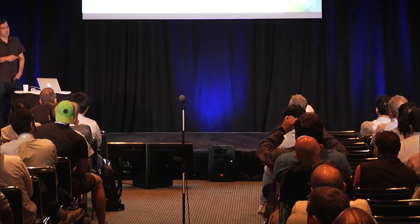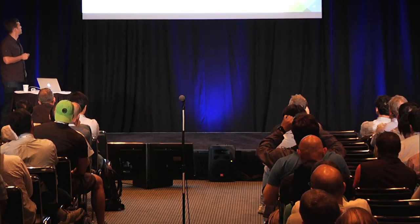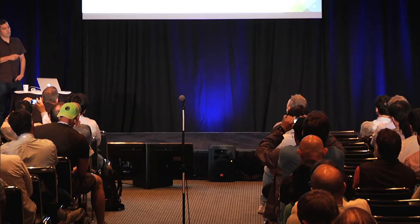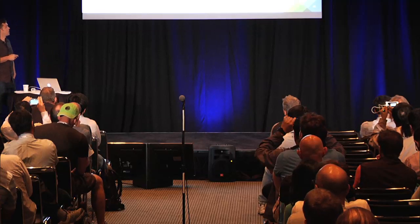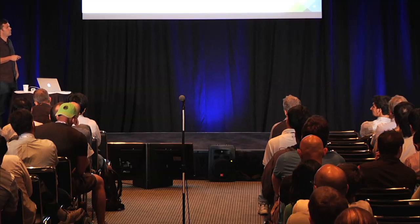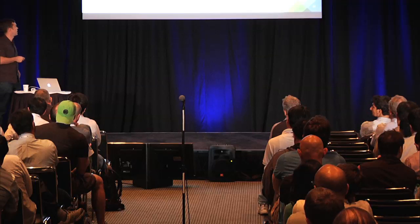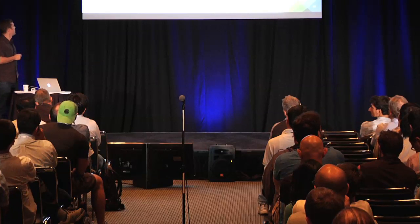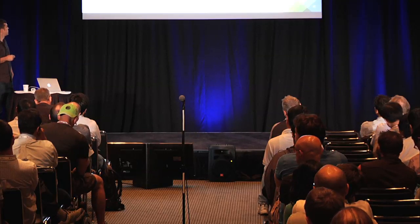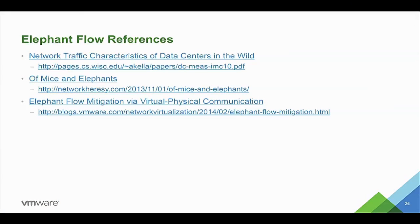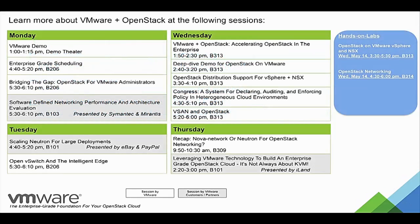Here are some references. The first paper covers data center traffic research showing that most flows are mice but most data is elephants. Martine Cassato and I wrote a blog post about elephants and mice. The third reference describes the work done with HP for the SDN approach. VMware is also hosting some related presentations.